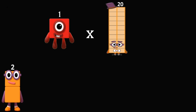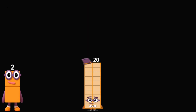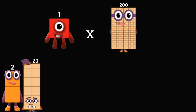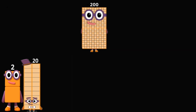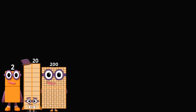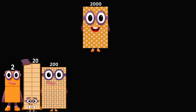1 times 20 equals 20. 1 times 200 equals 200. 1 times 2,000 equals 2,000.